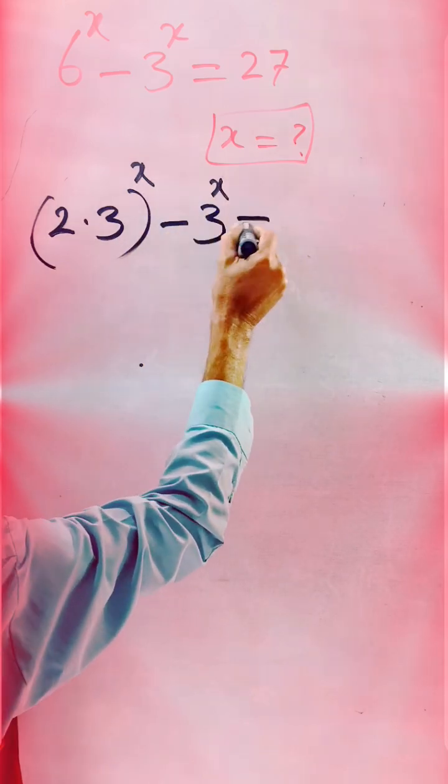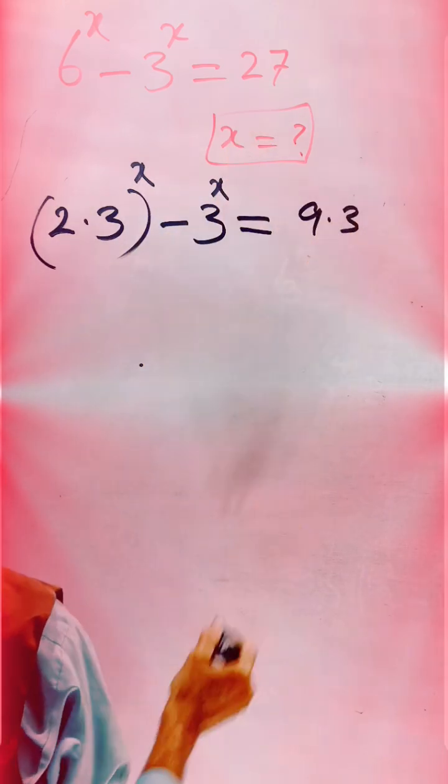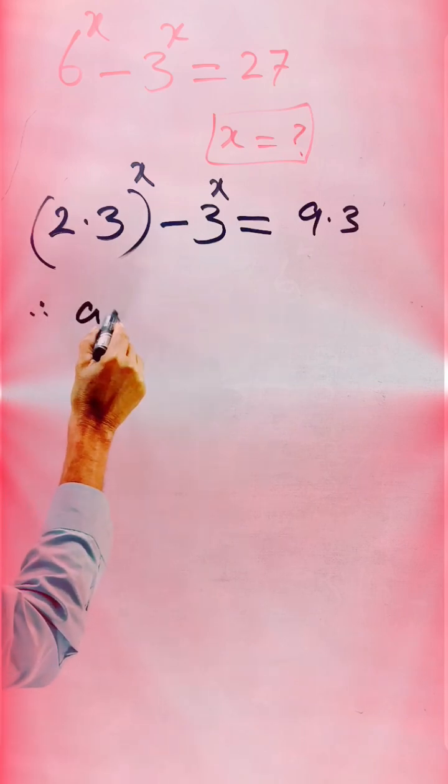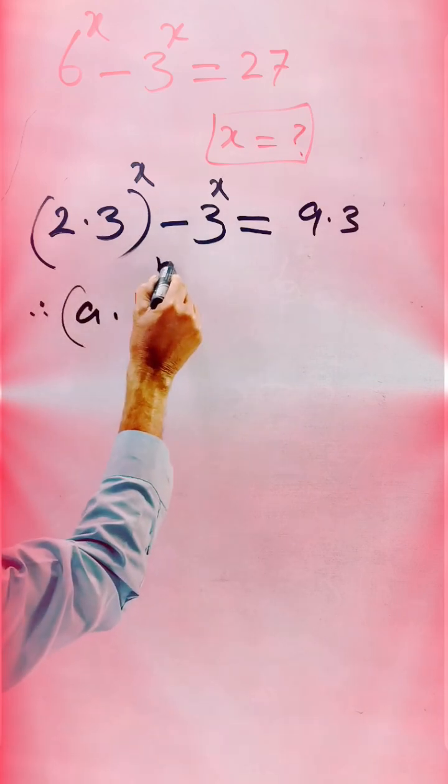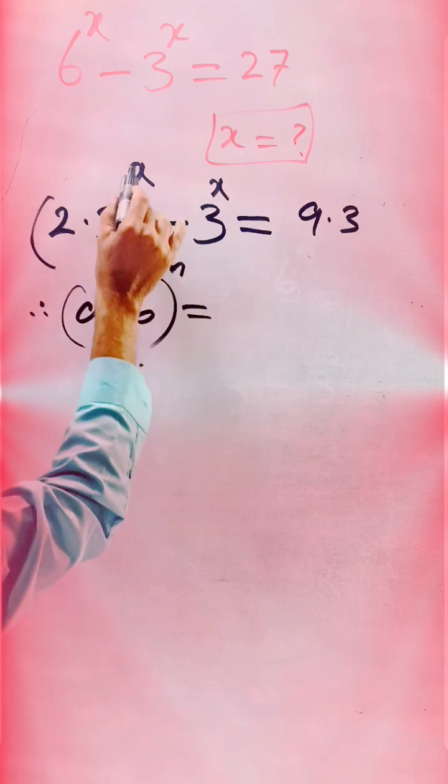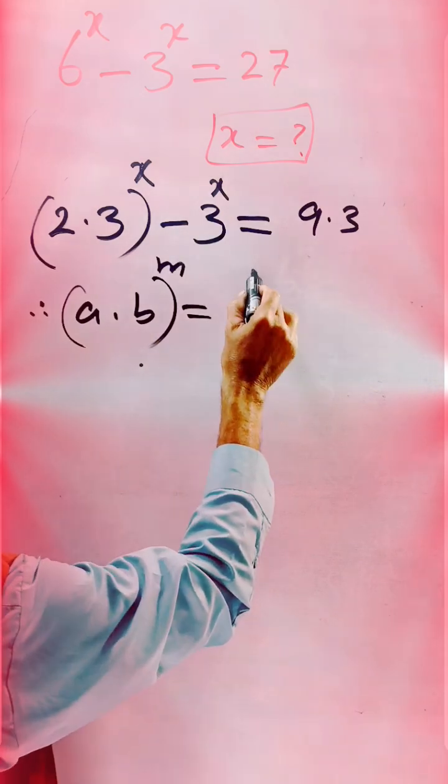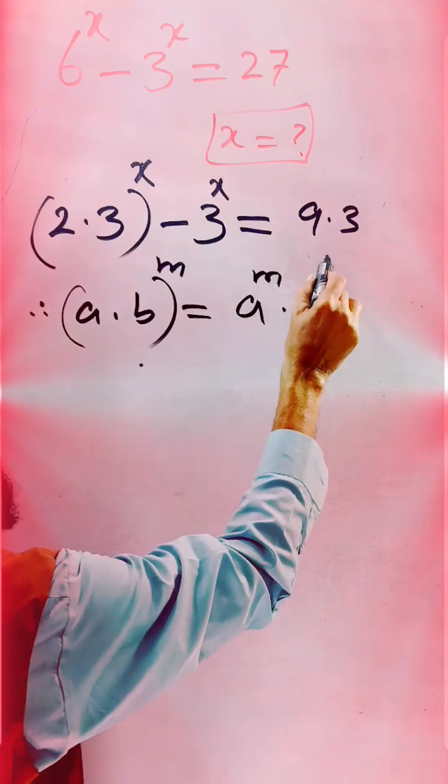Now expanding by the rule (a·b)^m. So here consider m is equal to x, and a is considered to be 2, and b considered to 3. Similarly, if we are expanding this form, we get a^m and b^m.